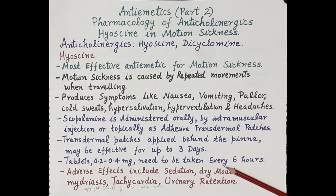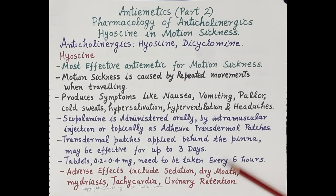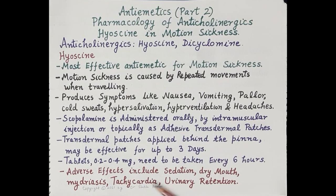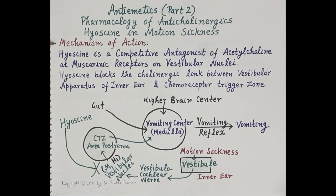For oral administration, tablets of 0.2 to 0.4 milligrams are given. Since hyoscine has a short duration of action, these tablets are to be taken every six hours. Hyoscine shows anticholinergic side effects such as sedation, dry mouth, mydriasis, tachycardia, and urinary retention.